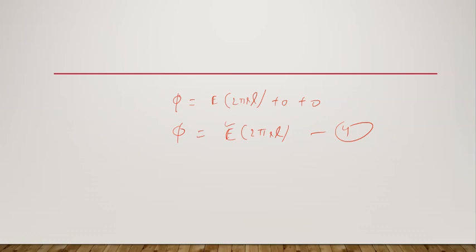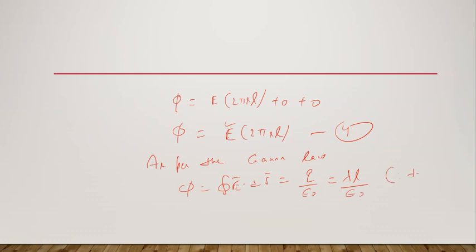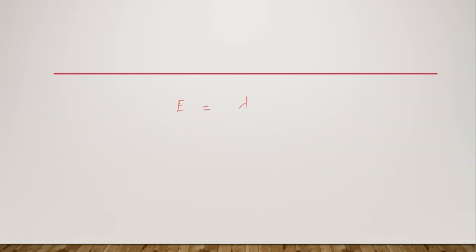Now we apply Gauss's law: flux = ∮E·dS = q/ε₀. Since we are dealing with line charge distribution, q = λl, so flux = λl/ε₀. This is equation number five. Comparing equations four and five: E·2πrl = λl/ε₀. Solving for E gives E = λ/(2πε₀r).